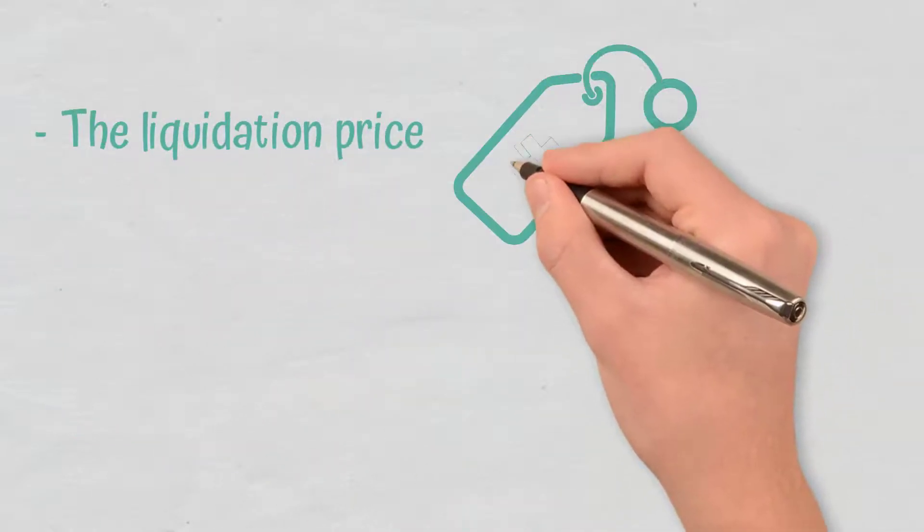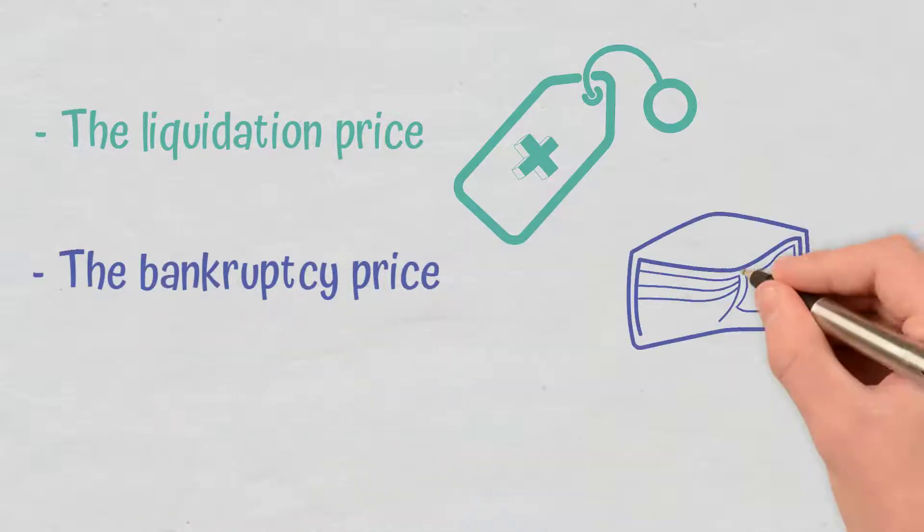Namely, the liquidation price, at which a position triggers a liquidation; the bankruptcy price, at which a position has incurred losses that are equal to its collateral; and the closing price, at which a position can be actually closed.